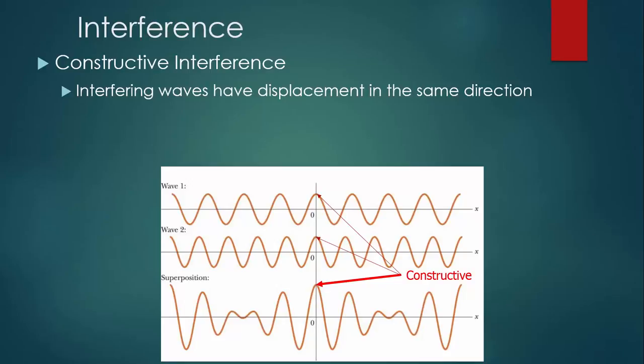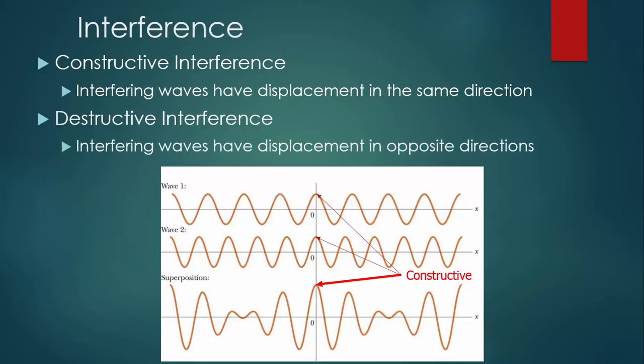The other type of interference is destructive interference, and this is when interfering waves have displacement in opposite directions. Wave one has displacement above the midline, wave two has displacement below the midline, and you can see where they are in superposition that they've basically canceled each other out.